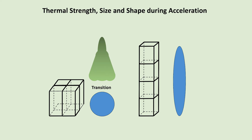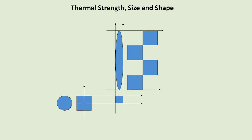Here we have the thermal on the left, shown in blocks to illustrate cross-sectional area. Here we have the transition of it turning into a bullet shape as it accelerates upwards. If we want to reduce the profile of the thermal by a quarter, we can see the round vortex shape becoming more bullet-shaped — much taller, but narrower.